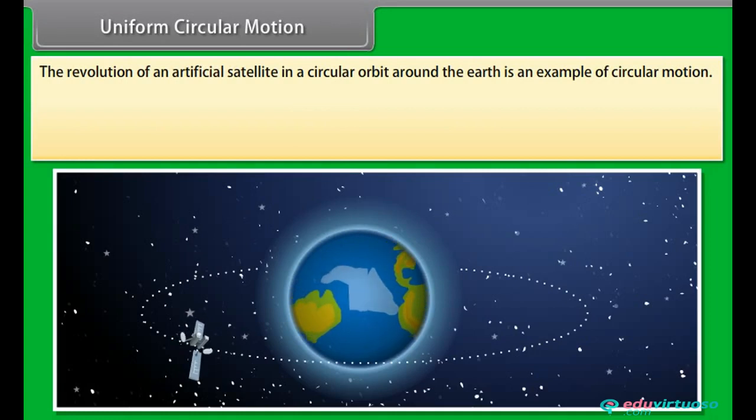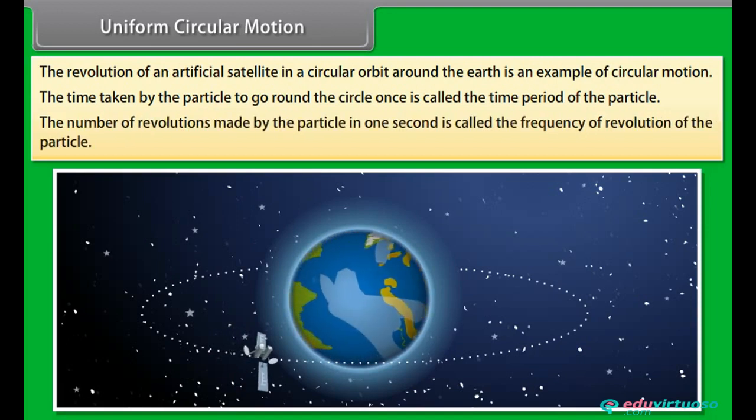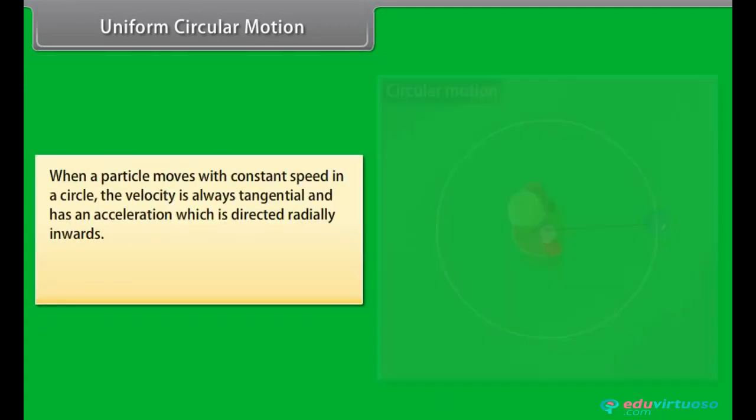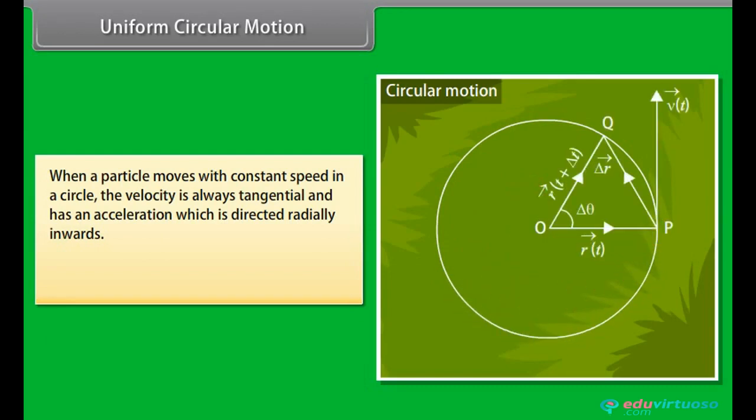Uniform circular motion. The revolution of an artificial satellite in a circular orbit around the earth is an example of circular motion. The time taken by the particle to go round the circle once is called the time period of the particle. The number of revolutions made by the particle in one second is called the frequency of revolution of the particle. When a particle moves with constant speed in a circle, the velocity is always tangential and has an acceleration which is directed radially inwards. Both velocities and accelerations have constant magnitudes but changing directions.